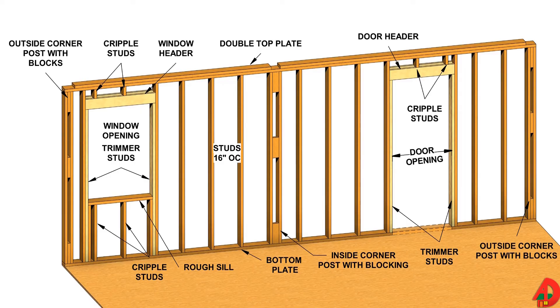Components of a wood-framed wall include studs, plates, headers, trimmer studs, sills, cripple studs, corner posts, and for some applications, braces might be required.